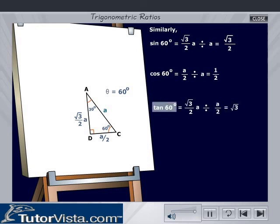Tan 60° is equal to root 3 by 2 into A divided by A by 2, that is equal to root 3.